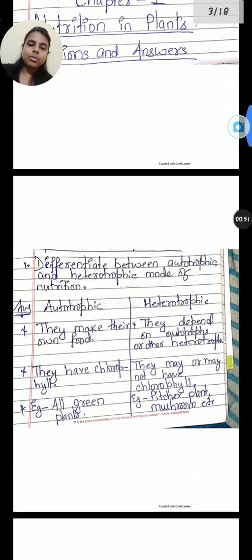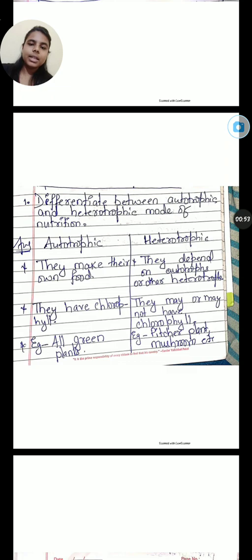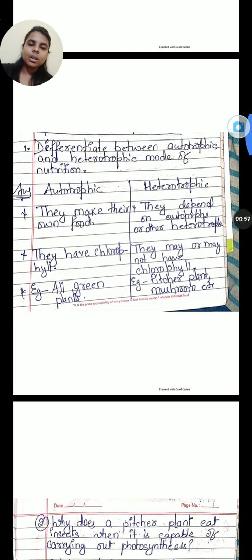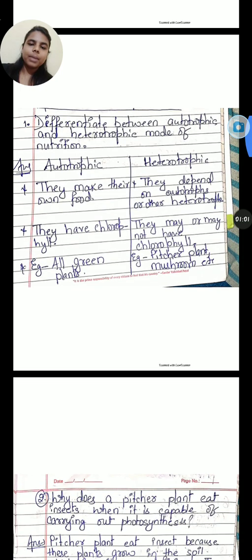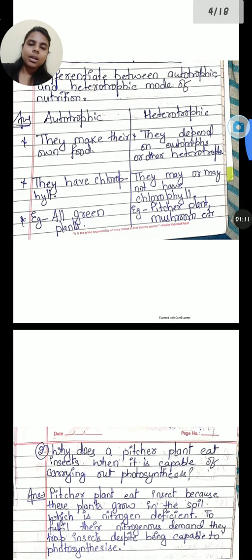So the first question asks, differentiate between autotrophic and heterotrophic mode of nutrition. Autotrophic: they can make their own food, they have chlorophyll. Example, all green plants. Heterotrophic: they depend on autotrophs or other heterotrophs, they may or may not have chlorophyll. Example, pitcher plant, mushroom, etc.